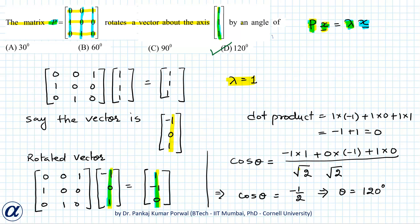Now if you want to find this answer in just one line, then there is a formula: if we are given a rotation matrix, then trace of that matrix is equal to 1 plus 2 cos theta. Here trace of P is sum of all the diagonal elements, that is 0. So that implies 0 equals 1 plus 2 cos theta, that implies cos theta equals -1/2, and that implies theta equals 120 degrees. So again, option D is correct.